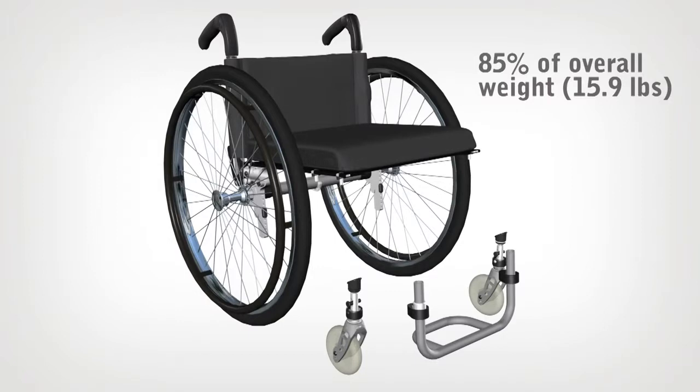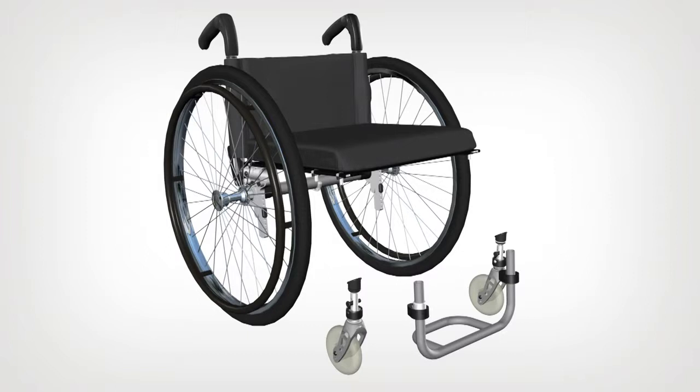When manufacturers claim a new chair weighs significantly less than an older model, they are usually taking out the weight in everything but the frame. Small reductions in things like fasteners, redesigned brackets and forks, lighter wheels, less bulky upholstery, etc. make up the primary difference in weight.